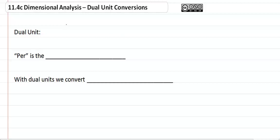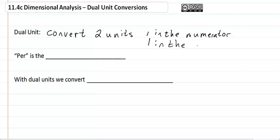Dimensional Analysis Dual Unit Conversions. Dual Unit Conversions are where you are converting two units, one in the numerator and one in the denominator.